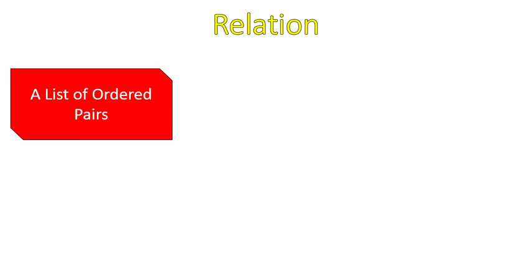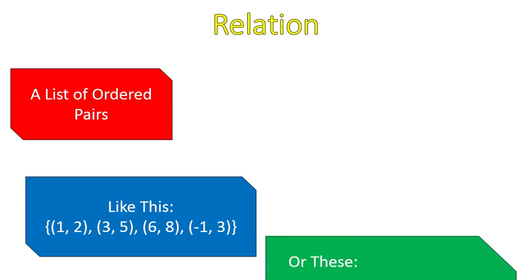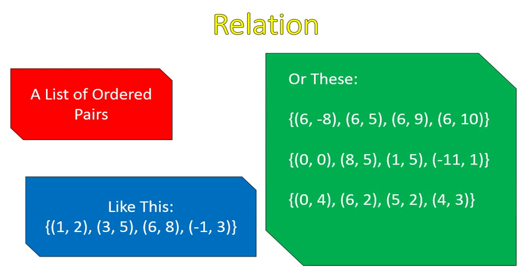So first off, let's talk about a relation. A relation is a list of ordered pairs. It can be listed like this. Here's an example of four ordered pairs. Here are some other examples of ordered pairs. Any list of ordered pairs is a relation. It can be listed like this, or it can be any points on a graph, or any points inside of a table, or an arrow diagram. There's lots of different ways to write them, but basically it's a list of ordered pairs, x and y values.